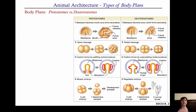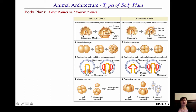Protostomes and deuterostomes are characterized by four major features, all having to do with development — you want to commit all of these to memory. Here's the blastula that's just gone through gastrulation, and here's what's referred to as the blastopore — the opening of that pocket that forms. If the blastopore forms the mouth first and then later forms the anus second, then you're a protostome.